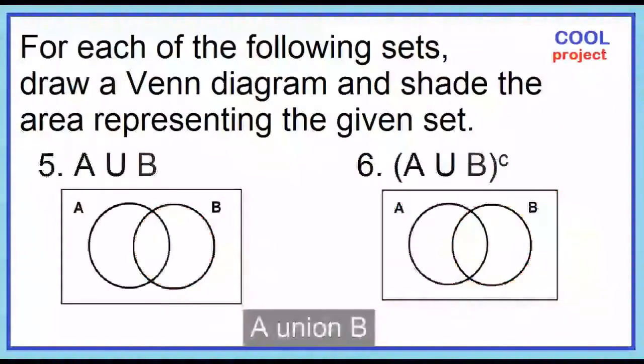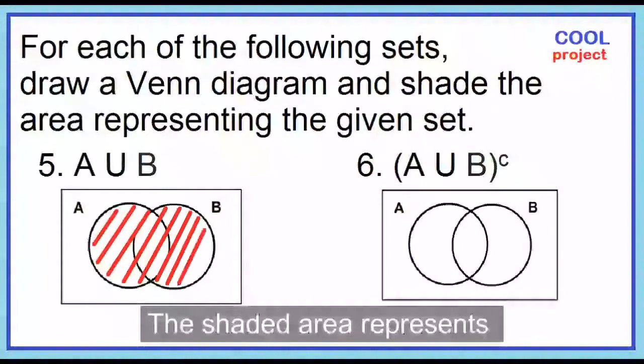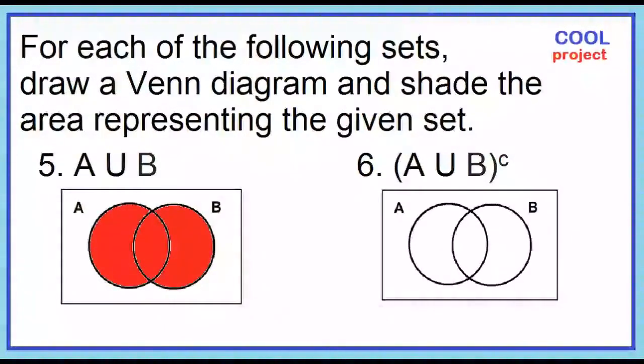Number 5. A union B. Shade A as well as B. The shaded area represents A union B.